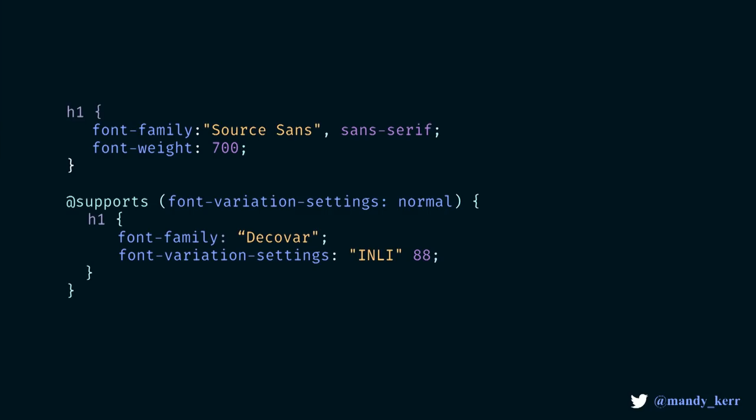If you need to support older browsers, we can make use of CSS feature detection to check whether or not variable fonts are supported. If they are, we can load in the styles that we need for our font. Then we just use our standard fonts as our fallback. I know this means that they're not going to look the same, but that's okay — we don't have to have everything looking the same in all browsers all the time. CSS feature detection makes this really easy for us.